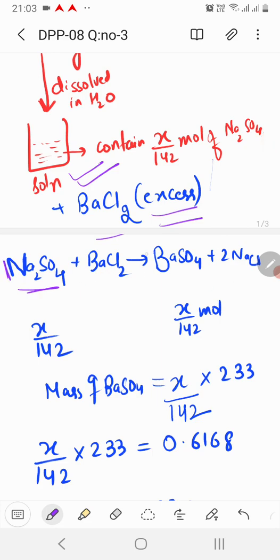Clearly, 1 is to 1 ratio is there. Stoichiometric coefficients are 1 and 1. So, it means that x by 142 moles of Na2SO4 will give you x by 142 moles of BaSO4.